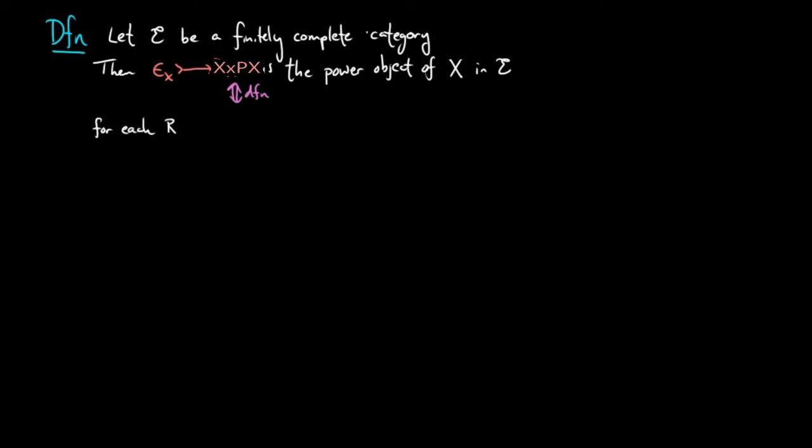provided that for each sub-object R of the product of X and Y there is a unique morphism phi from Y to PX such that the following diagram commutes and the upper square is a pullback.